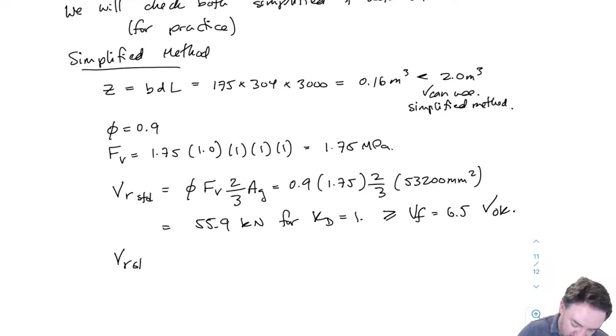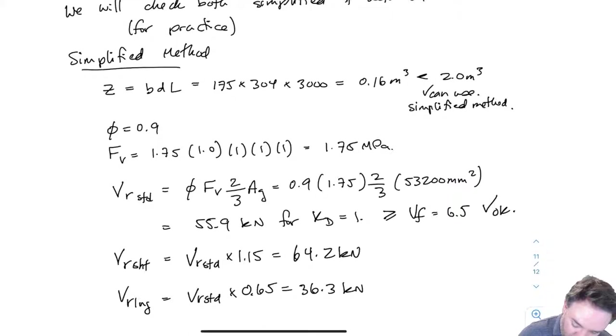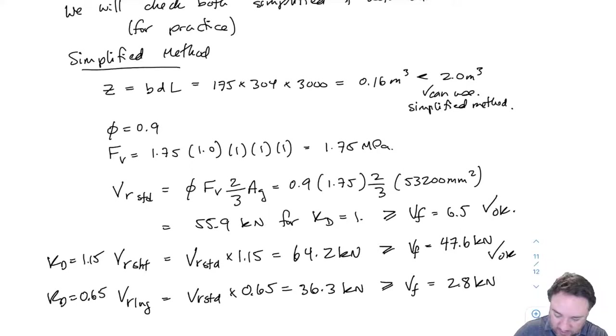So now I can do the same thing for my short duration load and my long duration load. The shear resistance equation is linearly proportional to KD because KD is just within FV. So this is just going to be VR standard times 1.15 for the KD short duration. And I get 64.2. And for the long duration, I get VR standard times 0.65 and that's 36.3. And now if I go back to my load combinations and take the highest shear loads for each of those different KD factors, I'm going to get 47.6 for KD equals 1.15 and 2.8 for the long duration KD equals 0.65. So these are both okay.